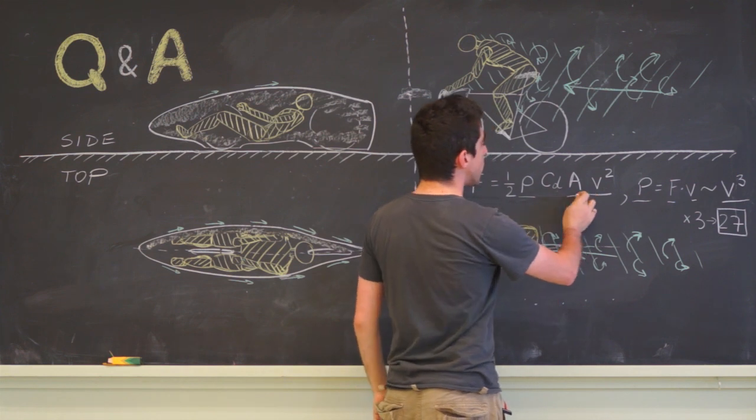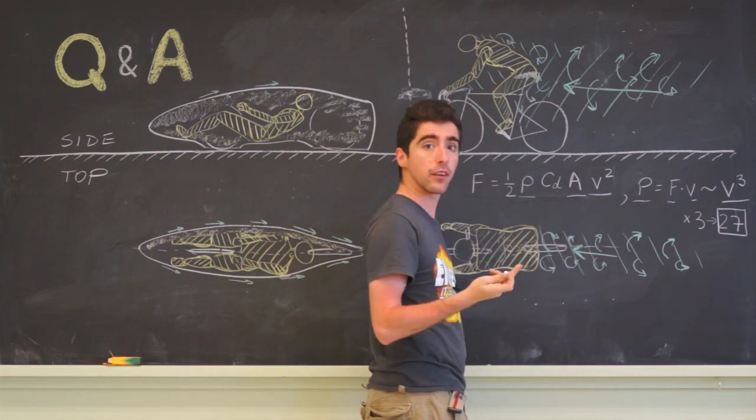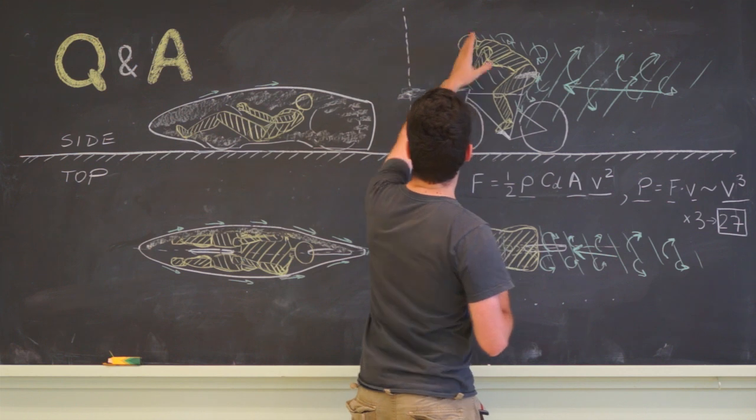We can also decrease the area, the frontal area of the vehicle. As you can see, we make our rider horizontal.